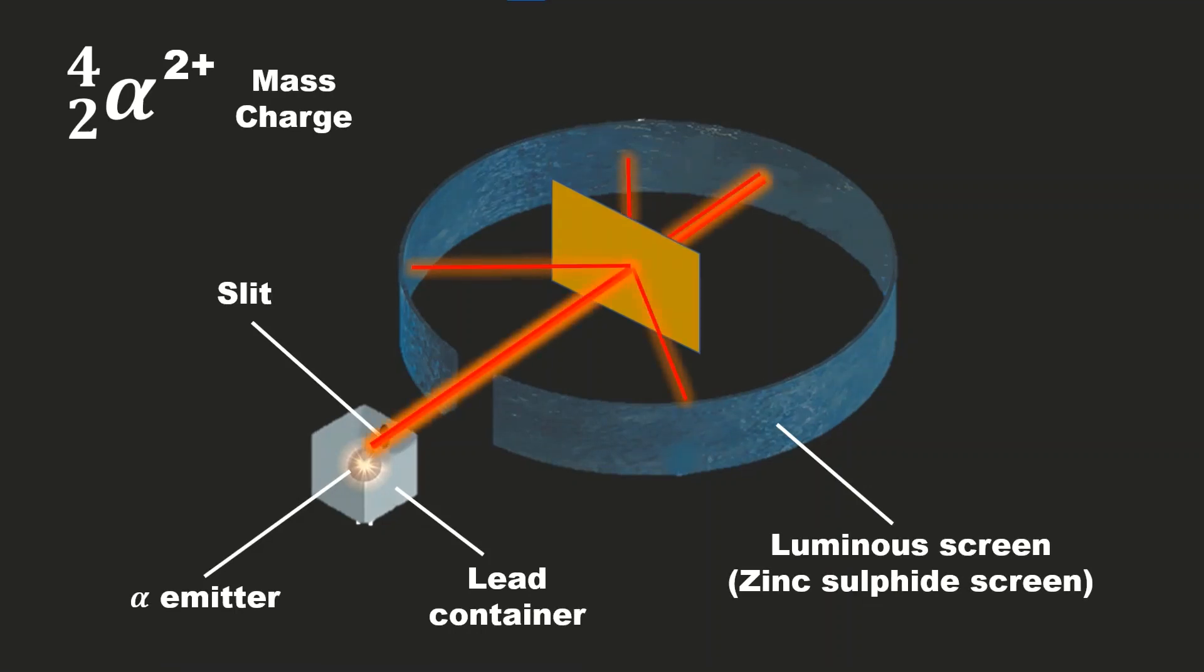But he saw deflection. When the rays hit the gold foil, although most of them went undisturbed, some of them deflected. To understand what happened, let's go deep inside the gold atom.